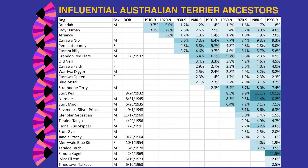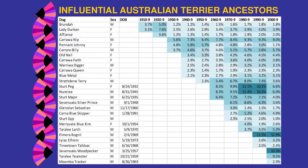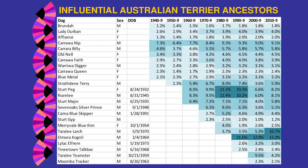In the 1990s, Elmora Cognil jumps in at 11.5% — a very quick rise, probably a popular sire born in 1969. In the 2000s, Seven Oaks Woodpecker jumps in at 10% and Taralee Teamster appears. In our current decade, Carawa Nip and Carawa Billy remain high, Taralee Larch has jumped up, and Mora Cognil stays as one of the top influential individuals in your breed worldwide.